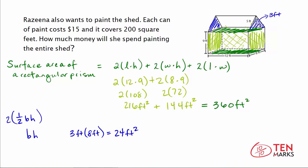The triangular prism also has rectangular sides that form the roof surfaces. There's a measurement of 5 feet representing the slant of the roof, and the length along the shed is 12 feet. We multiply 2 times 5 times 12, because there are two rectangular roof faces — one on each side. 5 times 12 is 60, times 2 equals 120 feet squared.